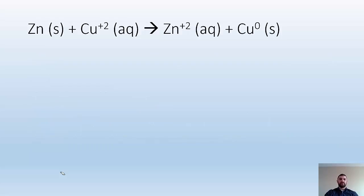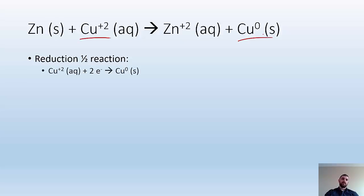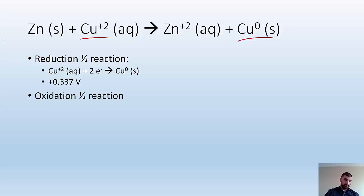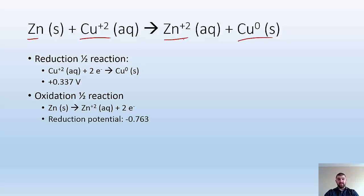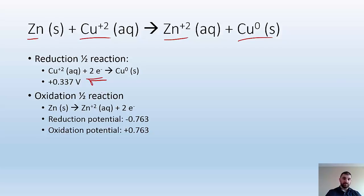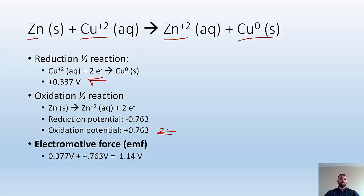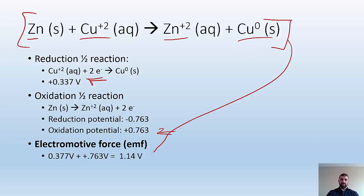Let's take a look at this reaction — a classic redox example. For the reduction half reaction, Cu is going from plus two to zero, so Cu²⁺ gains two electrons to give Cu⁰, with a potential of positive 0.337 volts. For oxidation, zinc is becoming Zn²⁺, so that is the oxidation half reaction. Your chart gives reduction potentials, so I have to negate: the reduction potential is negative 0.763, which means the oxidation potential is positive 0.763. So the overall voltage is 0.337 plus 0.763, which gives you 1.14 volts — that is the electromotive force.